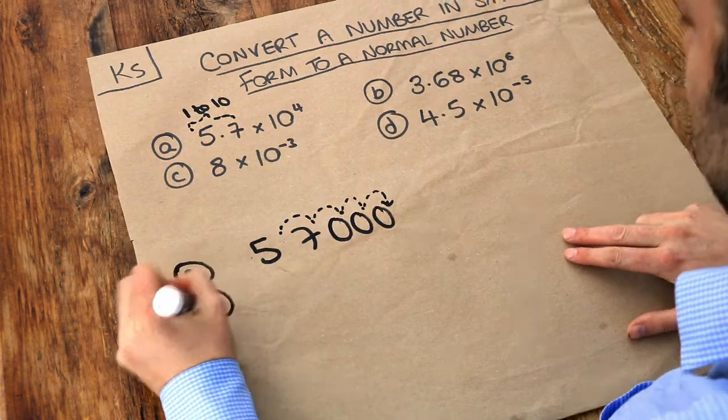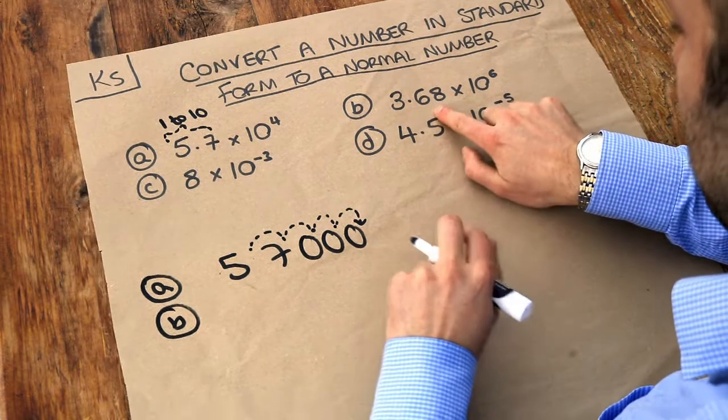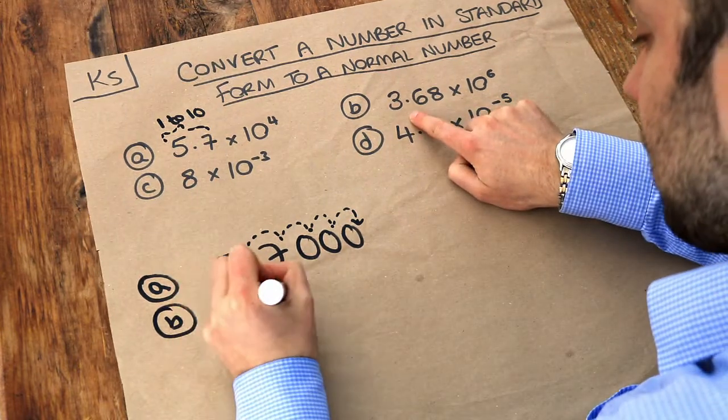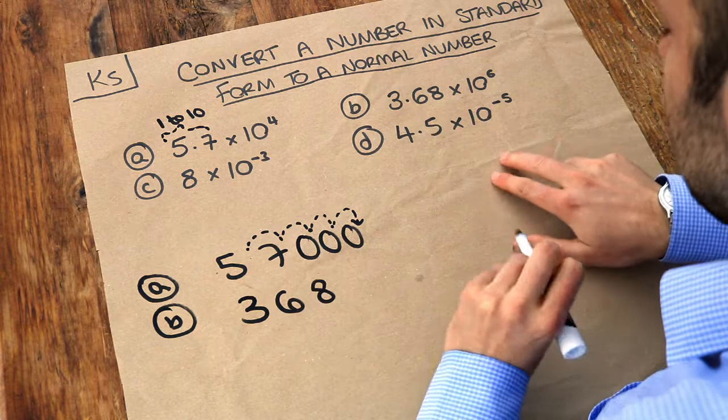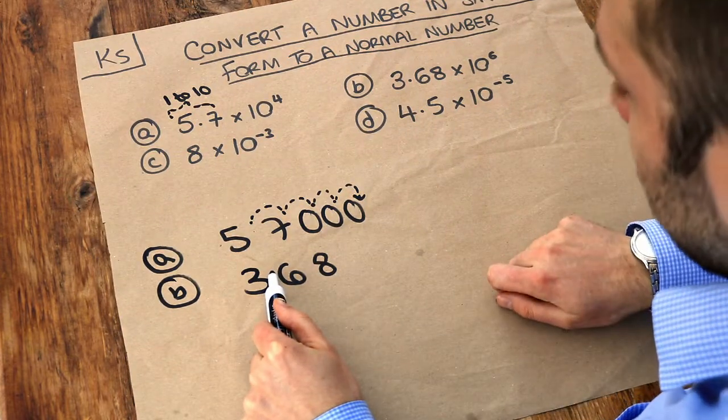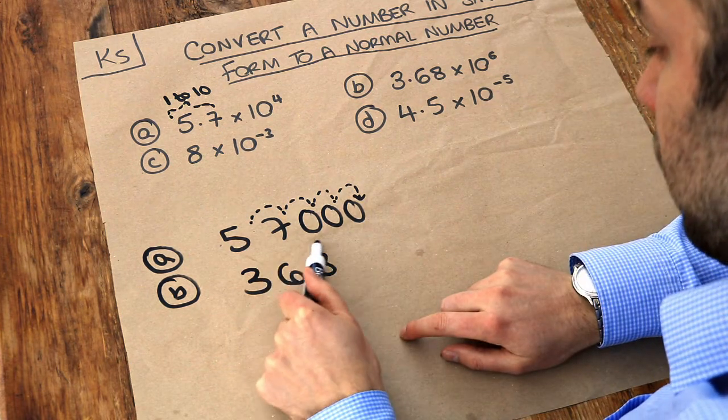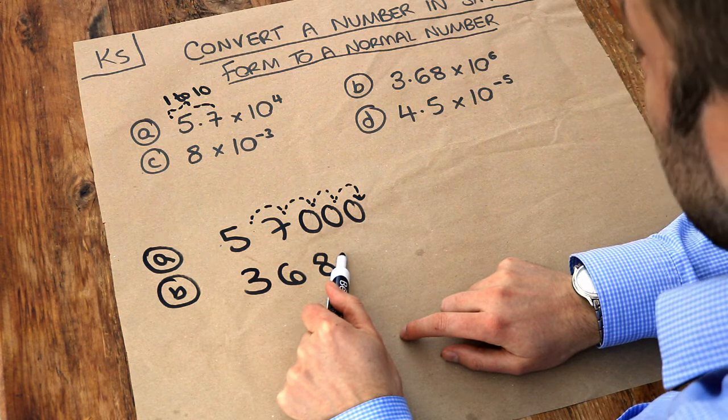What about the next one? 3.68 times 10 to the 6. Well let's just start with the digits 3, 6 and 8 without the decimal point. And at the moment the decimal point is here. Now we need to move the decimal place 6 times to the right. So we move it twice: 1, 2 to get to 368.